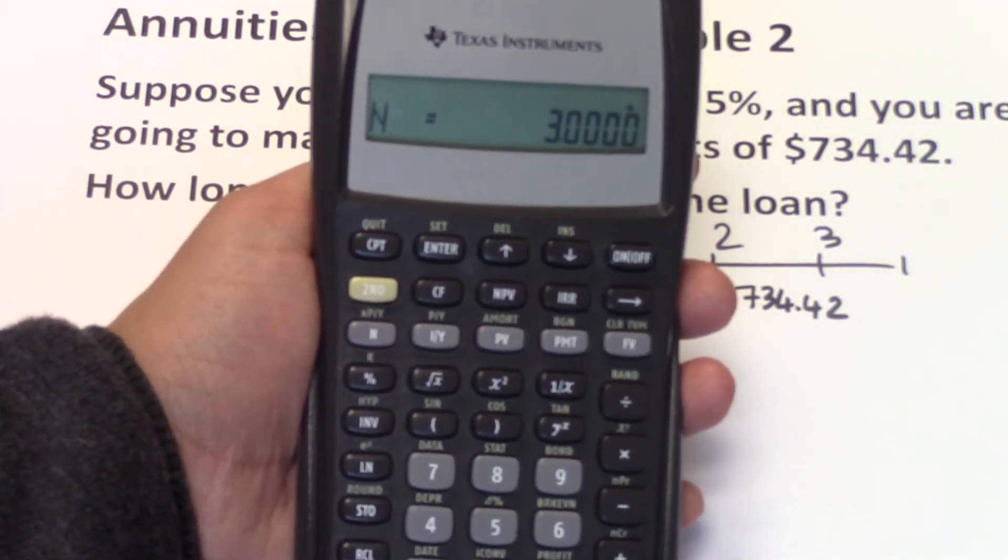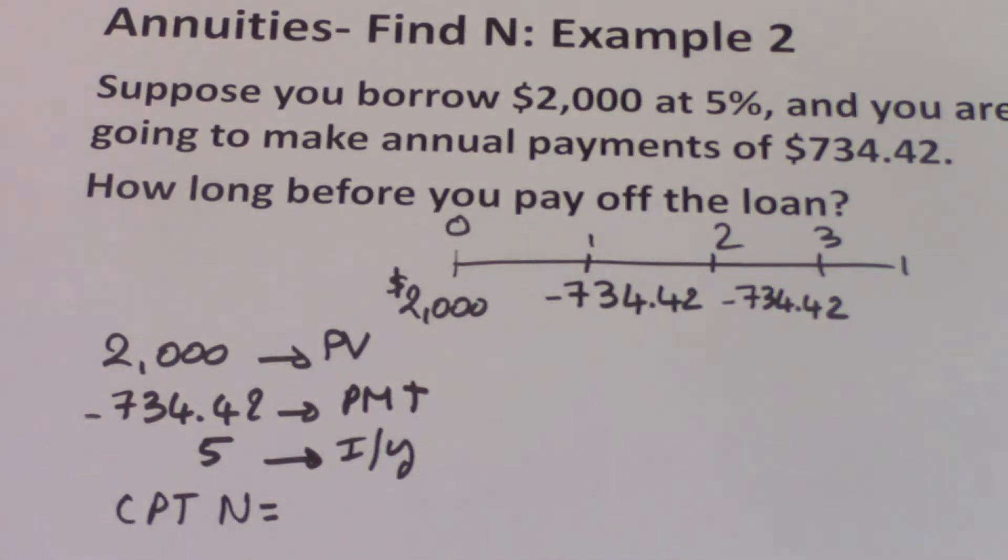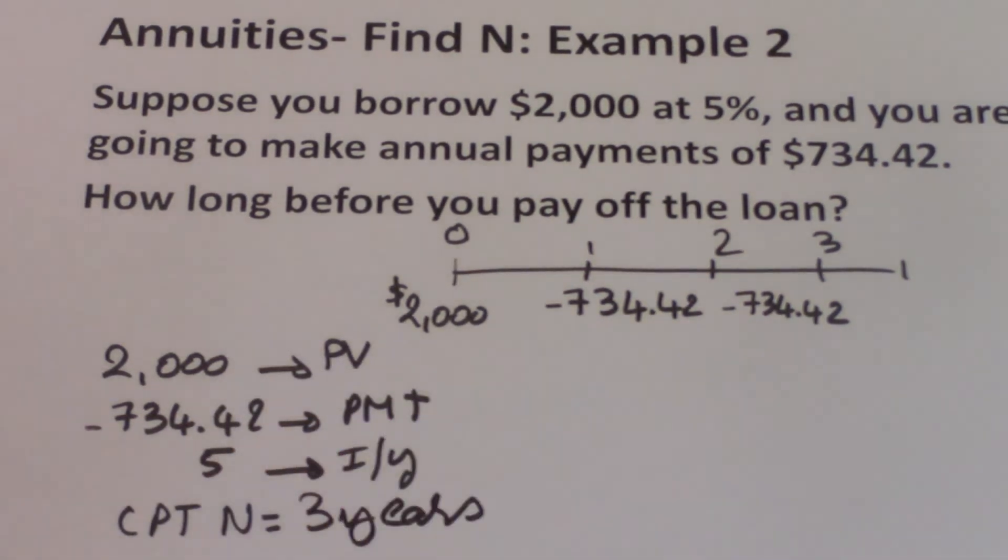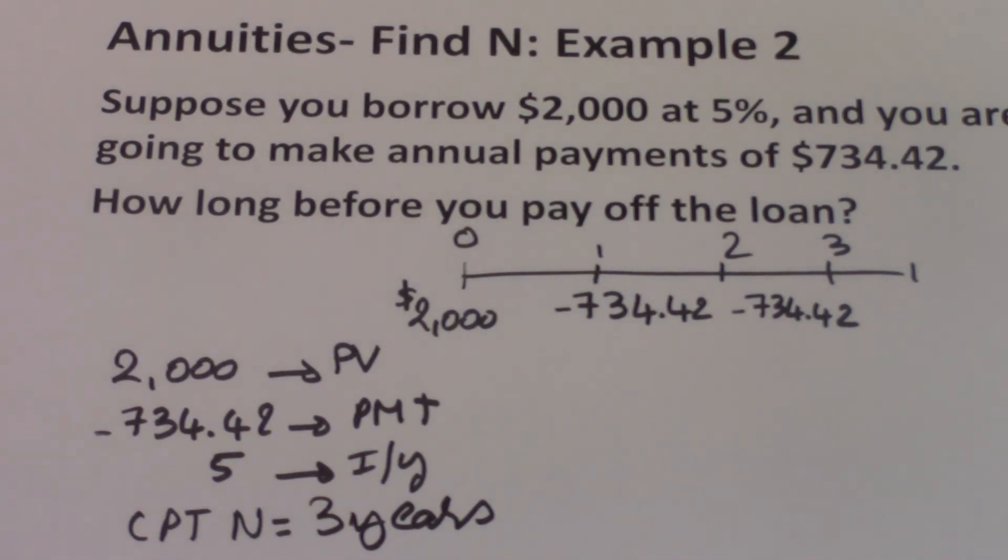This means that N is 3 years. This means that it will take us 3 years to pay off this loan if we make annual payments of $734.42.